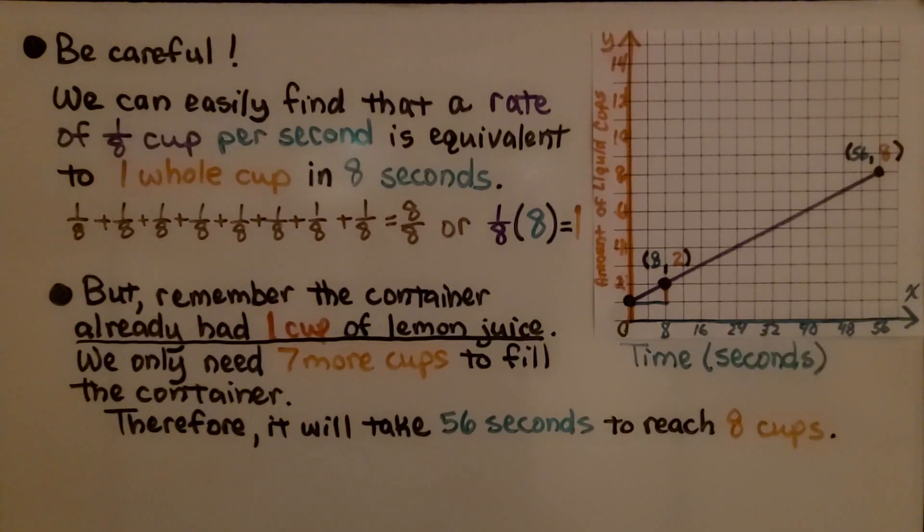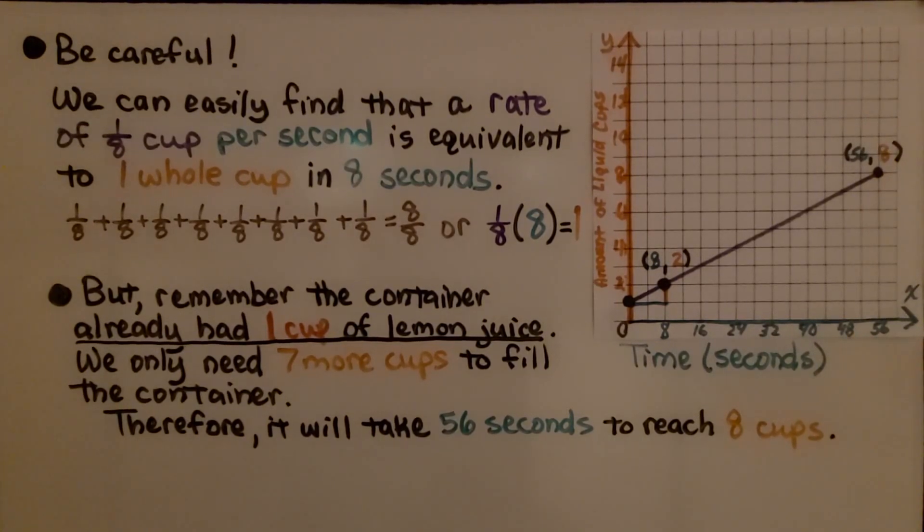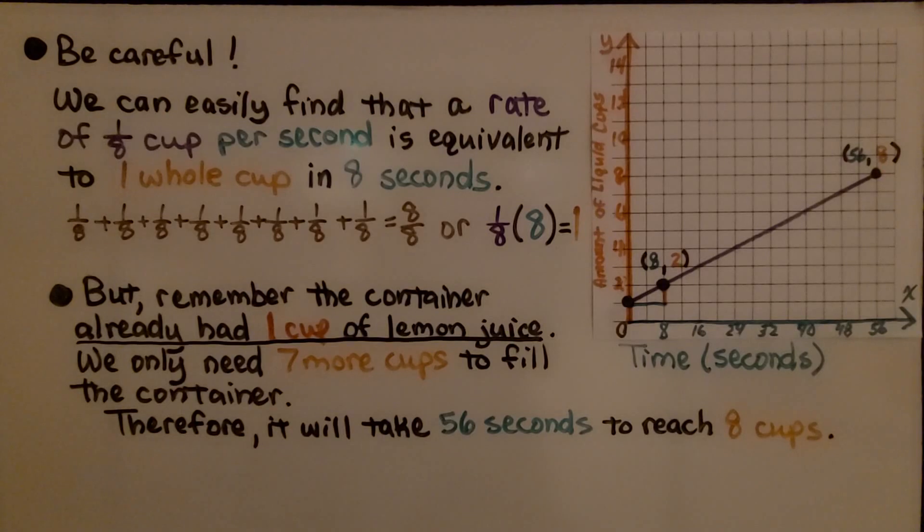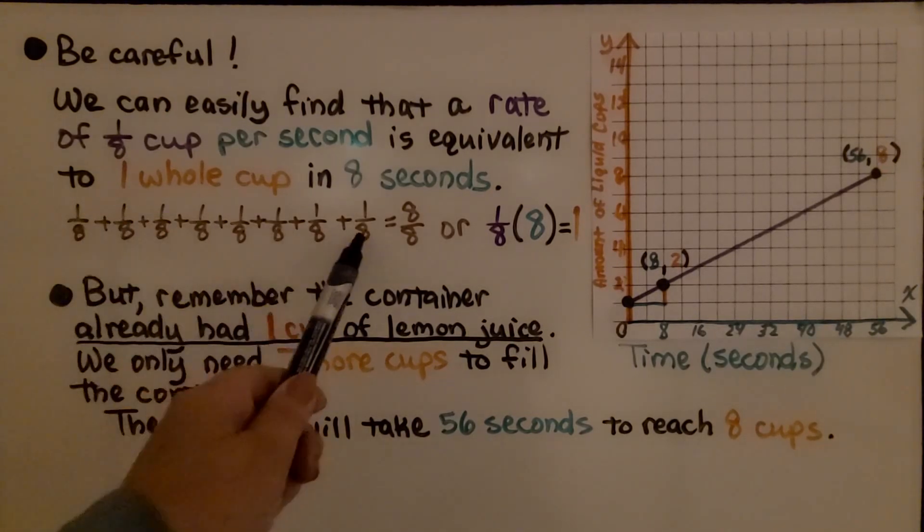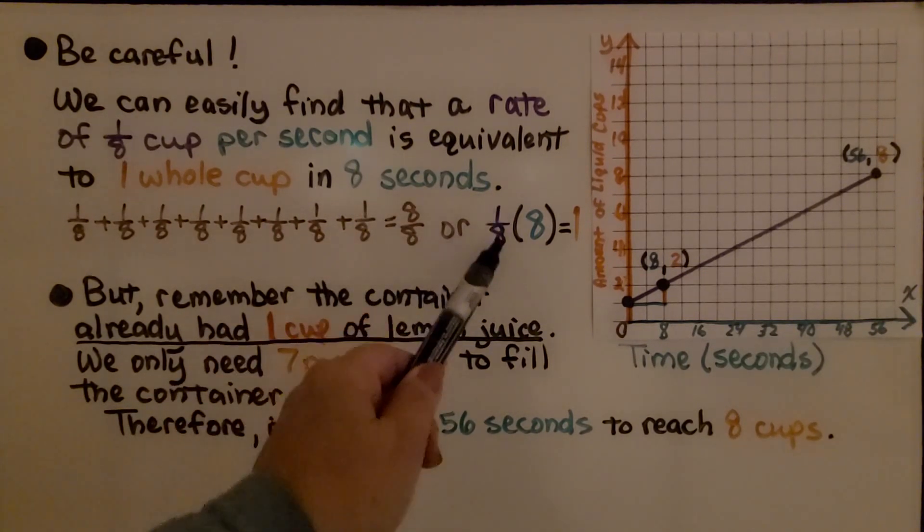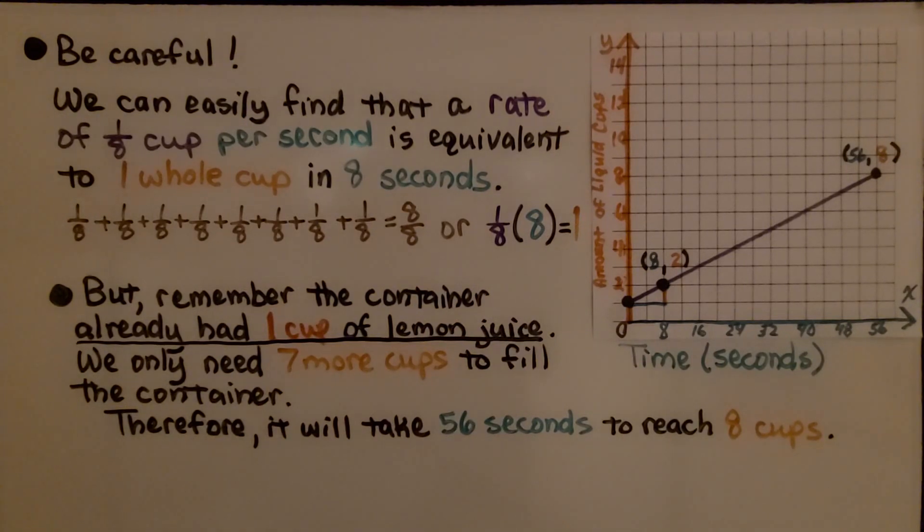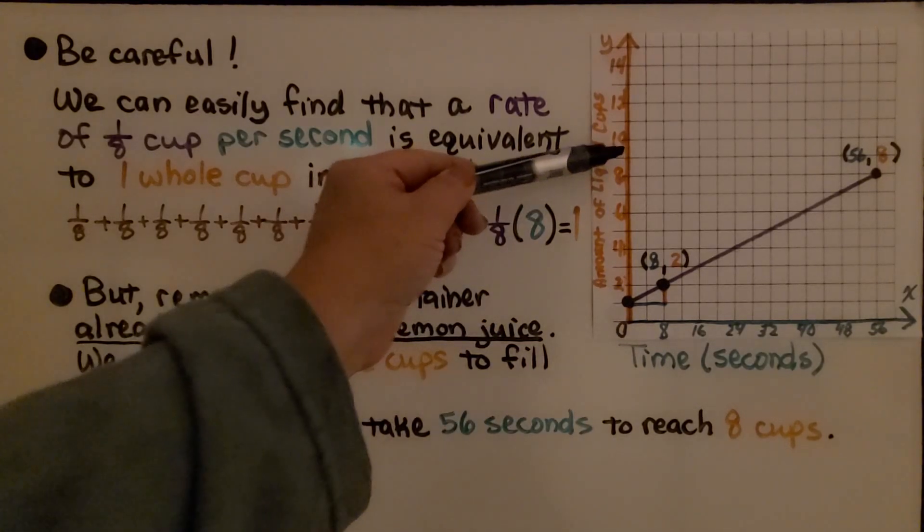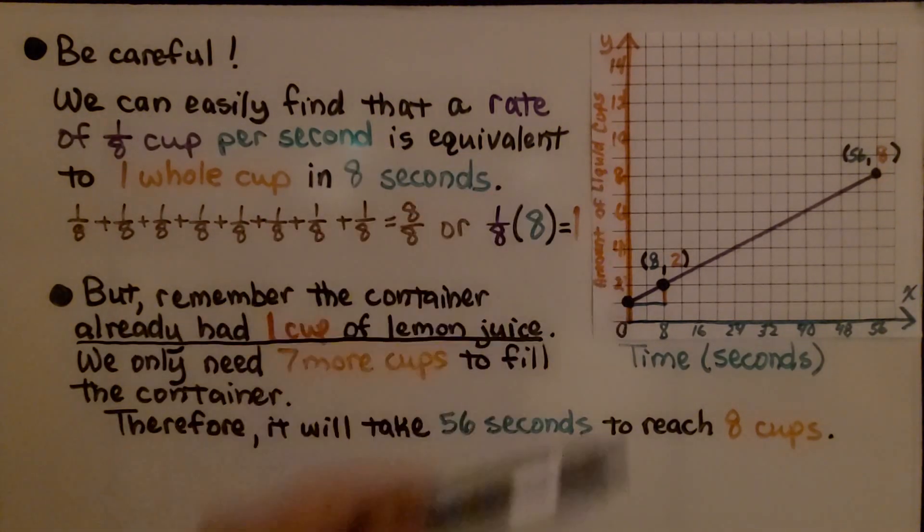Now we need to be careful. We can easily find that a rate of 1/8th cup per second is equivalent to 1 whole cup in 8 seconds. We have 1/8th, 8 times, that's 8/8ths, so 1 whole cup, or 1/8 times 8 equals 1. But remember the container already had 1 cup of lemon juice? That's why we started here. So we only need 7 more cups to fill the container. It has a maximum capacity of 8, so we only need 7 more. Therefore, it will take 56 seconds to reach 8 cups.